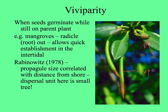We call these germinated seeds or fruits mangrove propagules. They can be carried around in the water and poke into the ground, and then from the part that pokes into the sand, roots come out and a new little mangrove tree can grow.